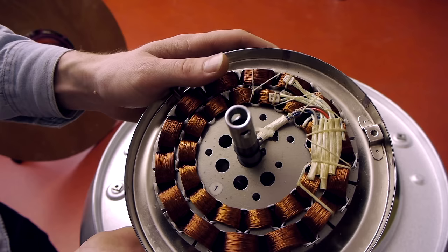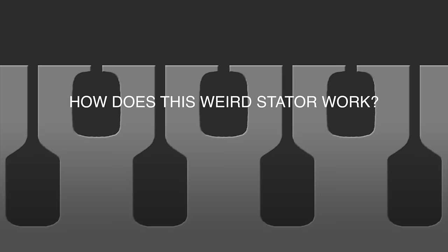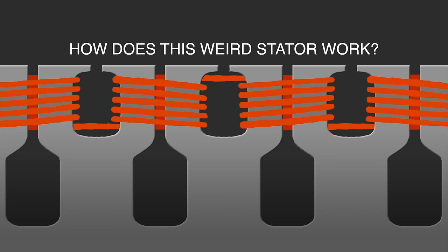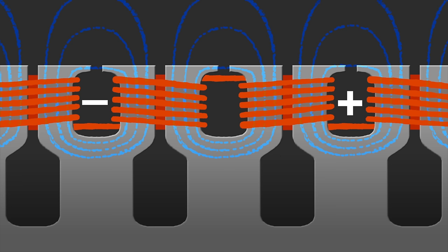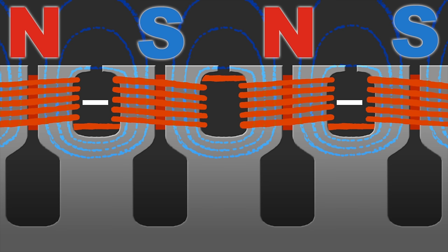Now, how does this weird stator work? I will be ignoring the inner coils. When an electric current is running through the copper wire, the two iron parts inside of one coil both turn into a magnetic north or south pole, depending on the direction of the current. The direction of the coil's wire is alternating, and the electric current is alternating as well, resulting in an alternating pattern of poles.